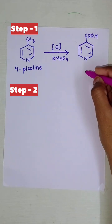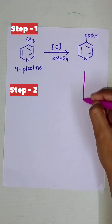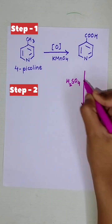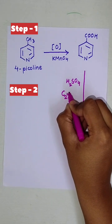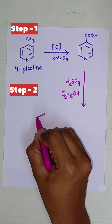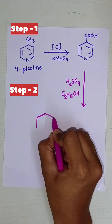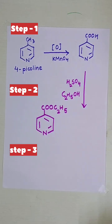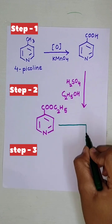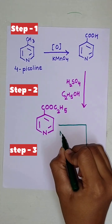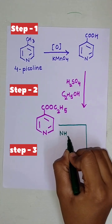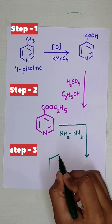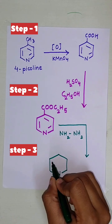Step 2: This reacts with sulfuric acid and ethanol to form an ethyl ester derivative. Step 3: Which further reacts with hydrazine (NH₂NH₂) to form our product, isoniazid.